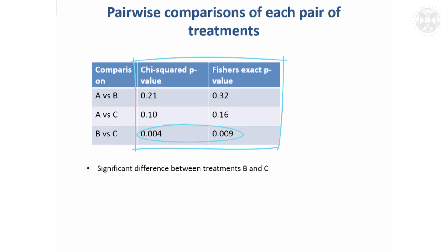We were only able to demonstrate that treatment B had a significantly lower cure rate than treatment C — these were the most extreme rates in the data set and gave a significant p-value. For reporting purposes, the non-significant comparisons would normally be labelled NS rather than showing the actual p-values.